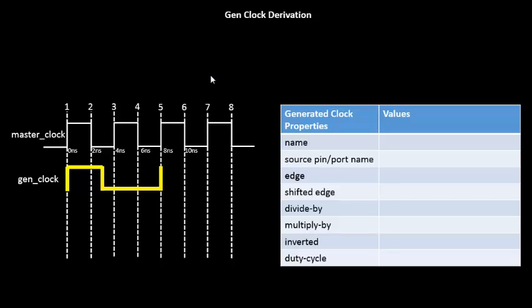Hello everyone, let's continue our discussion on GenClock derivation. We had a typical scenario where the generated clock waveform had a specific shape. The first rising edge of the GenClock arrived at the first edge of the master clock, and the second rising edge arrived at the fifth edge. But the middle edge — the fall edge, which is the second edge of the GenClock — is neither on edge 2 nor edge 3. So how do we code this kind of scenario?